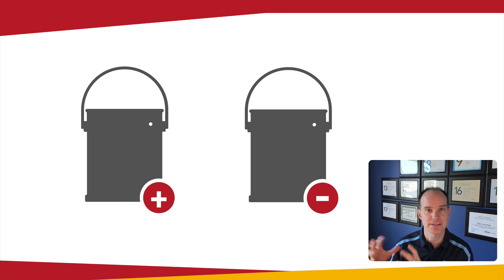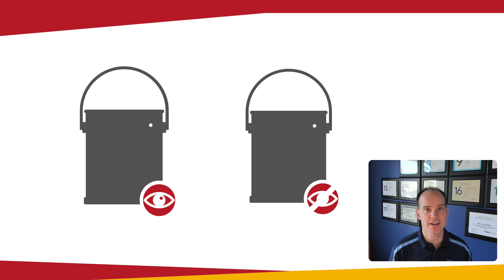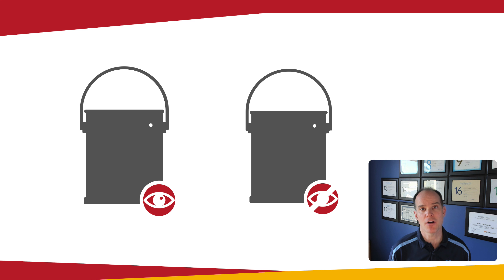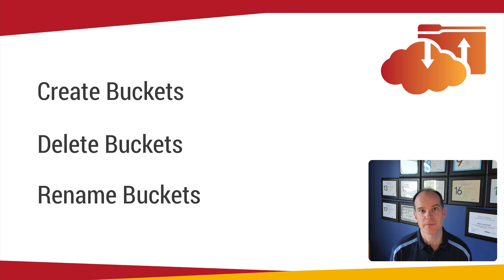A bucket is a containment area on S3 and that's the first way you can organize your S3. A bucket can be public or private — that's probably the key distinction for why you'd create one bucket versus another. You might have public buckets and private buckets, or a bucket based on some category. It's basically an organizational unit within S3. You could have one bucket that does it all, or several buckets for different purposes. This plugin can create, delete, and rename buckets.